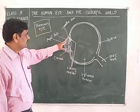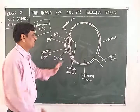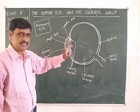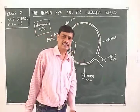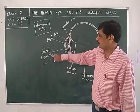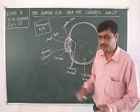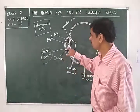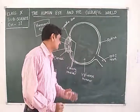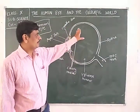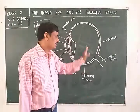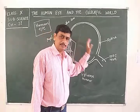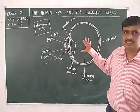Between the cornea and iris, there is a semi-liquid called aqueous humor. It helps maintain the bulging structure of the cornea and provides nutrition to the cornea's cells. Inside the eyeball, a semi-liquid called vitreous humor is present, which keeps the eyeball in its spherical shape.